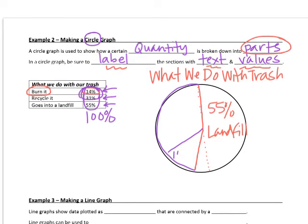And 14% of our trash gets burnt. So we burn, and I can't fit it in there, but try to fit it in the actual slice of the circle graph. Put burn it in there, and then the last part, about 31%, is going to be recycled. So I'm going to try to fit this in here, and please try to fit it in as well. Recycle.